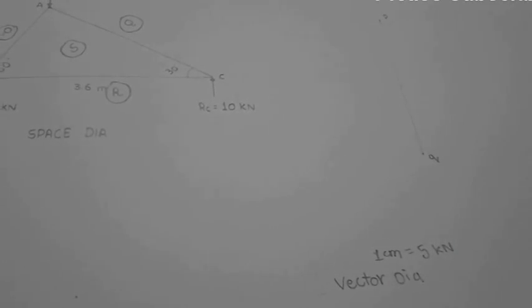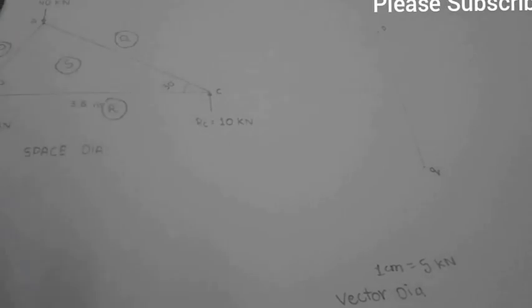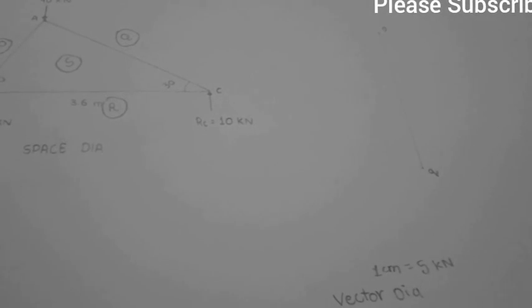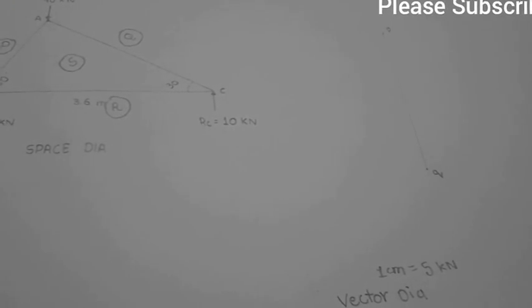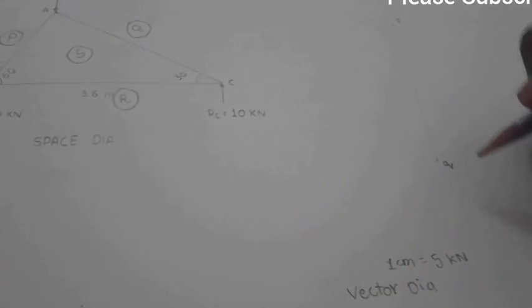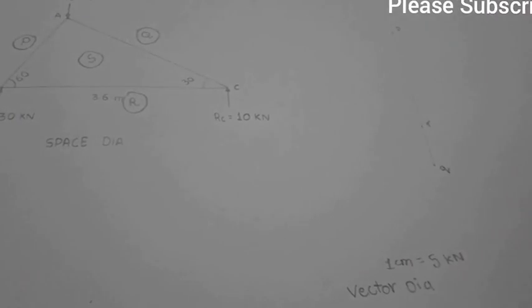Now draw Q to R, which is 10 kilonewtons upward force. 10 kilonewtons divided by 5 equals 2, so we have to draw Q to R equals 2 centimeters upwards. That's the point R.